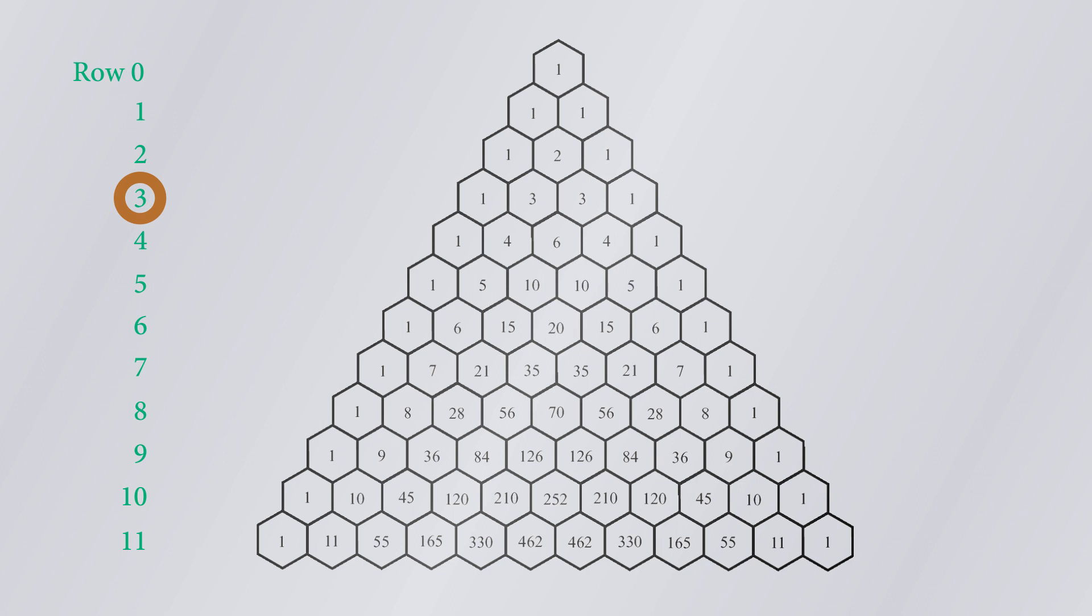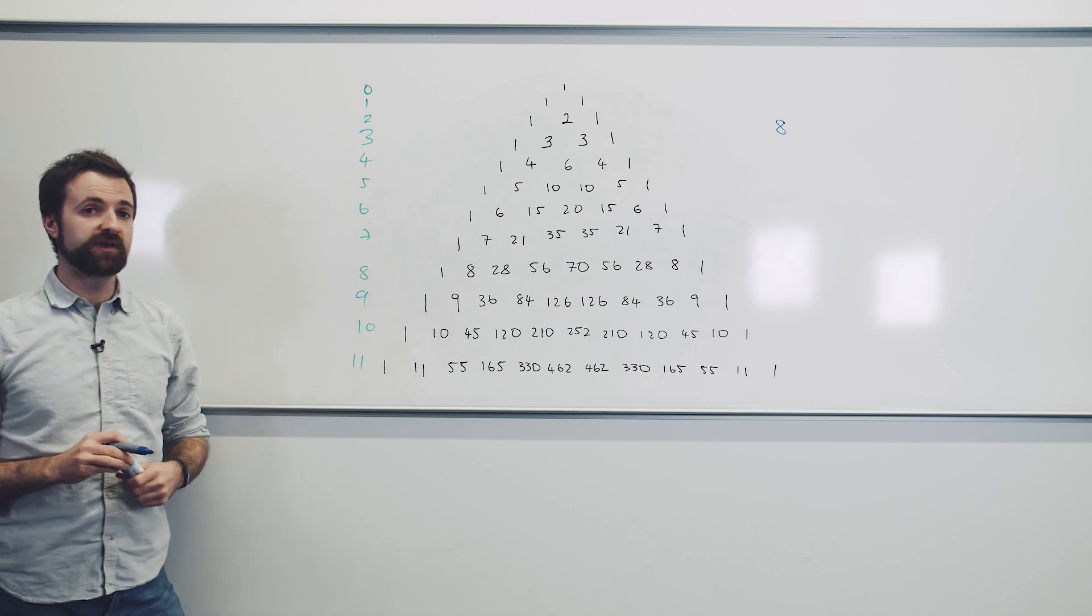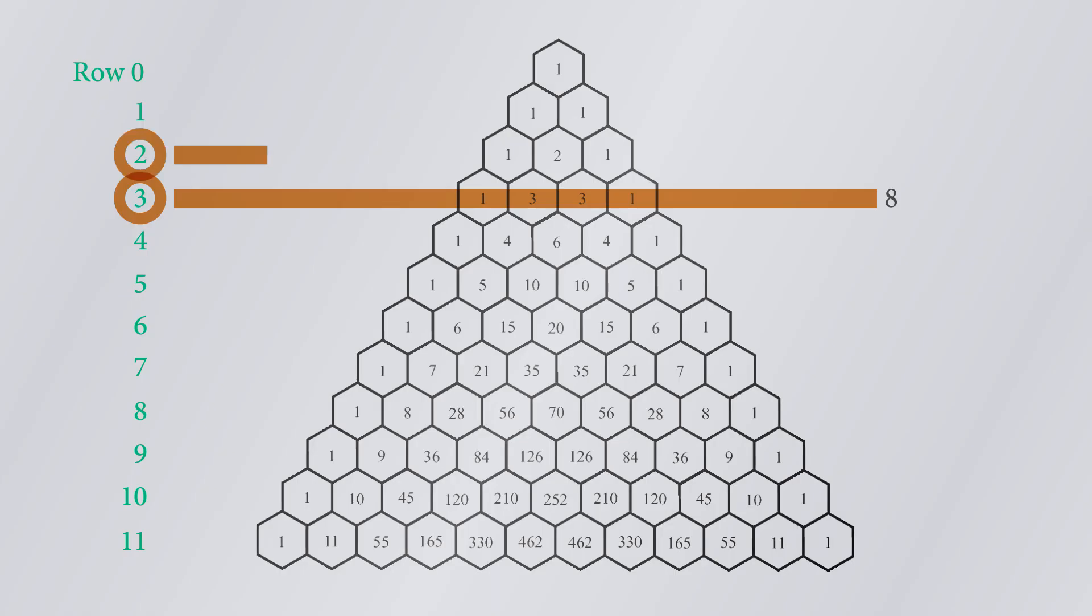If I'm flipping a coin three times, how many different possible ways are there of doing that? Well, there's one plus three plus three plus one gives you a total of eight. Looking at the second row, then that's how many different combinations I can have of flipping two coins. One plus two plus one gives me four.